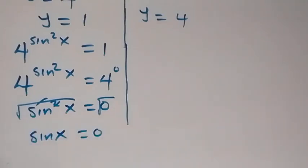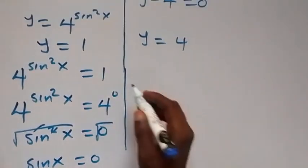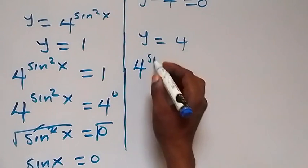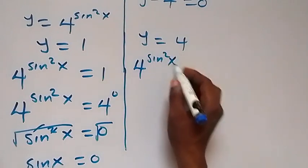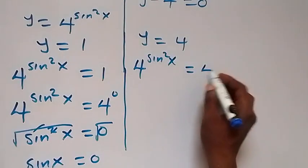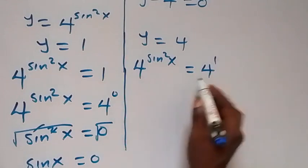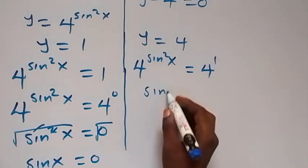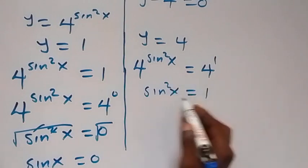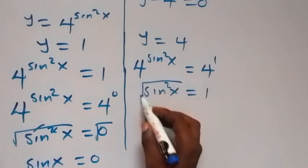For y equals 4: 4 raised to sine squared x equals 4, which equals 4 raised to 1. Since the bases are the same, sine squared x equals 1. Taking the square root of both sides, sine x equals 1.